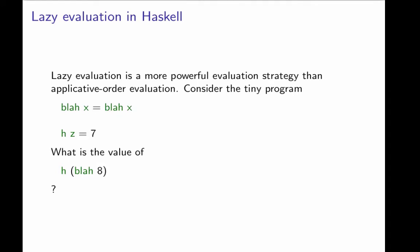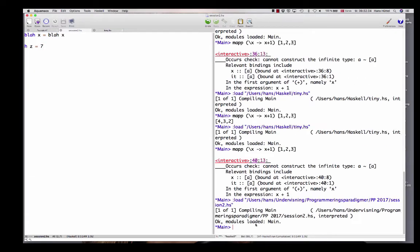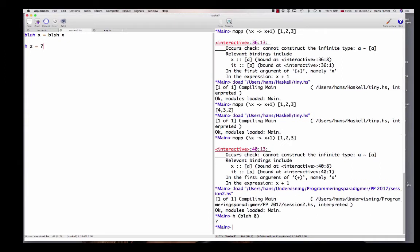And we've got another function, h. h of z is 7. And now you might wonder what's the value of h if we apply it to blah of 8. Let's find out. Let's load it into Haskell. And what happens if we call h with blah of 8? We get 7.